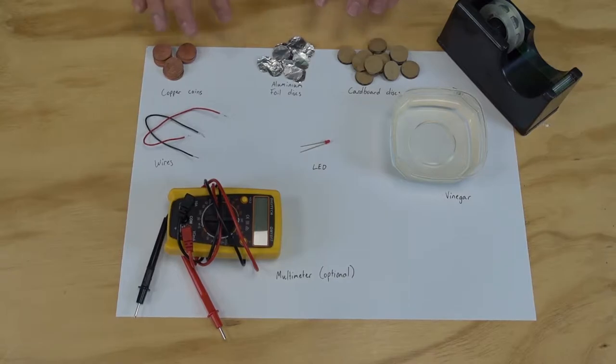How many coins and foil and cardboard discs you use is up to you. The more you use, the more voltage you're going to get out of your battery. I've got 12 here that I'm going for today.